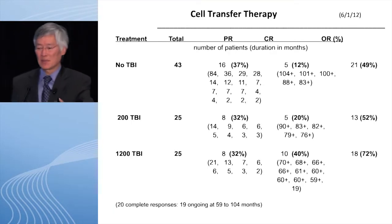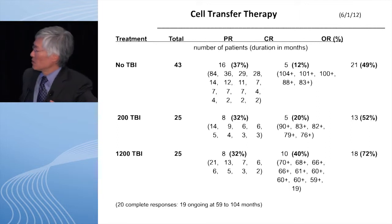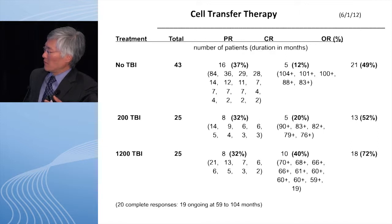This series of 93 patients now has seven-year follow-up. They were treated with a variety of preparative regimens: cyclophosphamide-fludarabine non-myeloablative, low-dose total body irradiation (TBI), and high-dose TBI. The two TBI groups also received autologous CD34s to ensure recovery. There were 43 patients initially, then two groups of 25 treated consecutively. The initial response rate was 49%, then 52% with low-dose TBI, and 72% with high-dose TBI — not statistically significantly different. However, the high-dose TBI group had a 40% complete response rate, and of 10 complete responders, only one has ever relapsed. So nine out of 25 patients treated over seven years ago are maintaining ongoing complete responses.